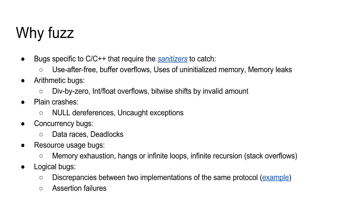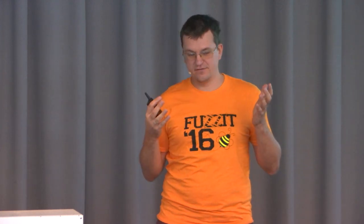Why would you want to fuzz something? First of all, C++ offers you many unique ways to shoot yourself in the foot — like buffer overflows, use-after-free, integer overflows, and such. Fuzzing is a very efficient way to find such C or C++ specific bugs. But even if you're using a safer language, you may still have divide-by-zero, null dereference, assertion failures, concurrency bugs, or bugs that cause your application to consume too much CPU, memory, or network bandwidth. Sometimes fuzzing may even allow you to find logical bugs.